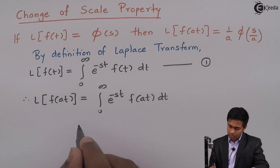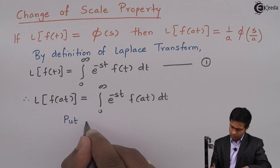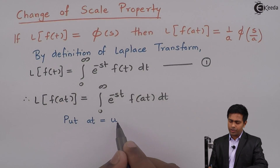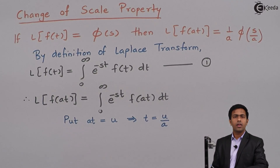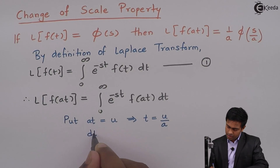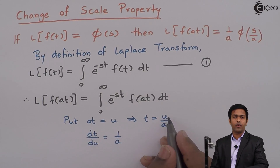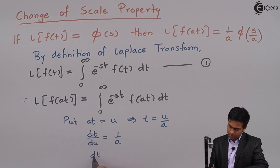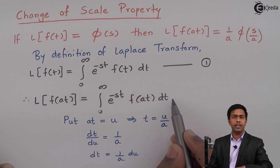To evaluate this integral, we use integration by substitution. Let u = at, so t = u/a. Differentiating with respect to u, we get dt/du = 1/a, since the derivative of u with respect to u is 1. Therefore, dt = (1/a) du.